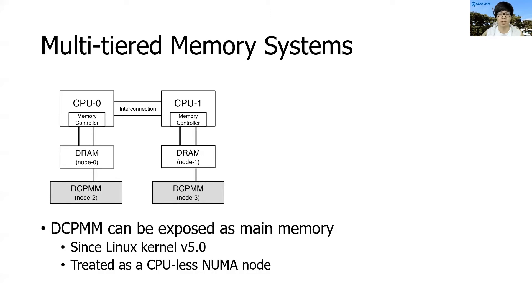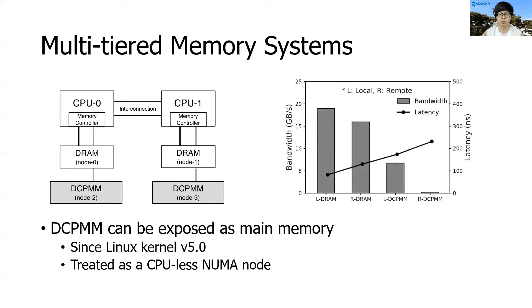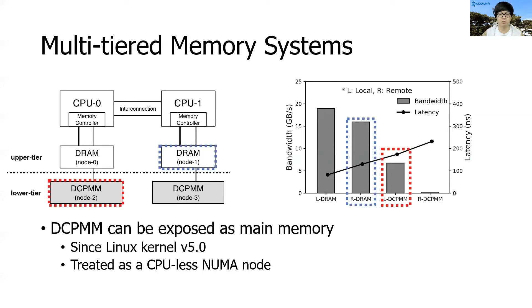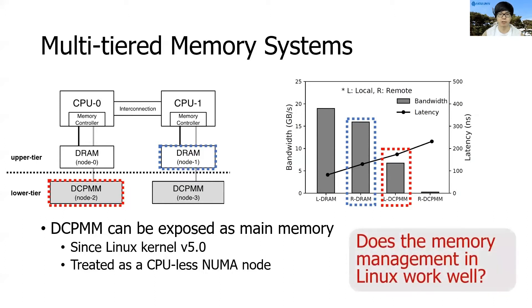What I'd like to point out here is that, unlike conventional wisdom in NUMA that remote memory is always more expensive to access, accessing the remote DRAM in a multi-tiered memory system actually provides more bandwidth and lower latency compared to the local DCPMM. Since the page management schemes in traditional operating systems are highly optimized for DRAM-only NUMA systems, we can raise a question whether the memory management in Linux works well. So in this study, we revisit the design of current page management schemes with the multi-tiered memory system and figure out the source of inefficiency.